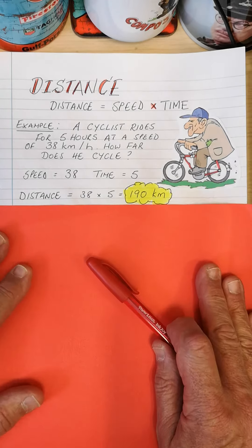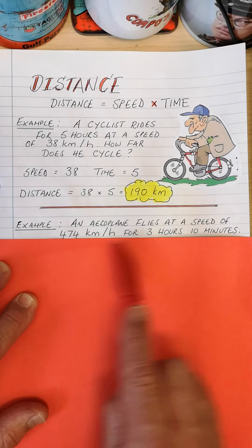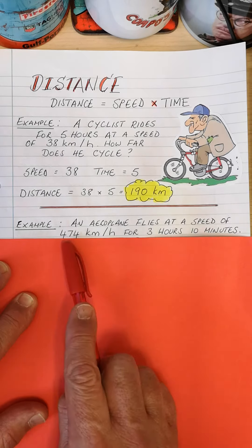Just recap. Speed equals 38 and the time was five. So distance is equal to speed times time. So quite simply, 38 times five, in five hours he would have cycled 190 kilometers.